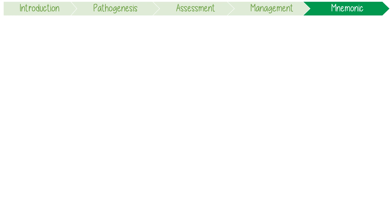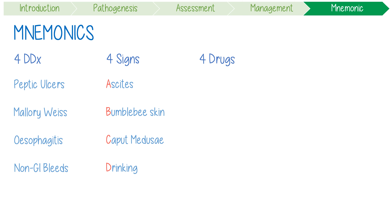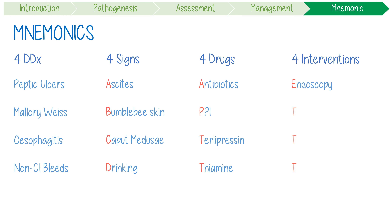Let's summarize using our four mnemonics of four. Four differentials of hematemesis: peptic ulcers, Mallory-Weiss tears, esophagitis, and non-GI bleeds. Four signs of liver cirrhosis — ABCD: ascites, bumblebee-coloured skin, caput medusae, and a history of drinking. Four drugs — APTT: antibiotics, proton pump inhibitors, terlipressin, and thiamine. Four interventions — E, triple T: endoscopy, tamponade, TIPS, then transplant. Mnemonics are the best way to learn medicine, so check out my other video on rhabdomyolysis for more memory tricks.